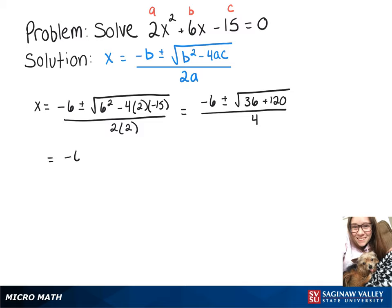Simplifying what's in the square root we now have negative 6 plus or minus the square root of 156 over 4.